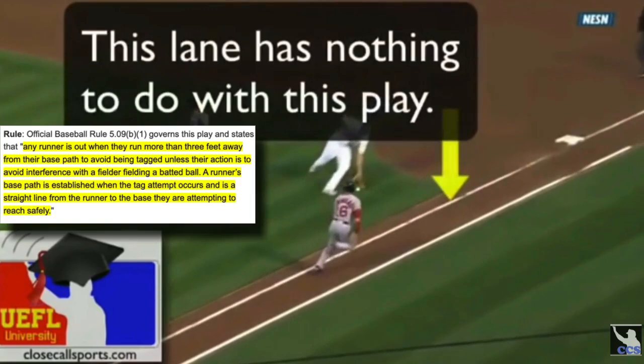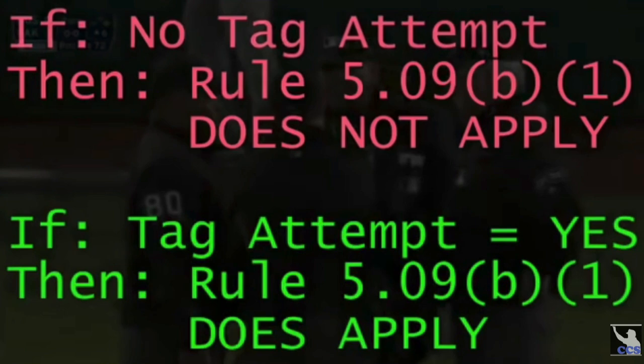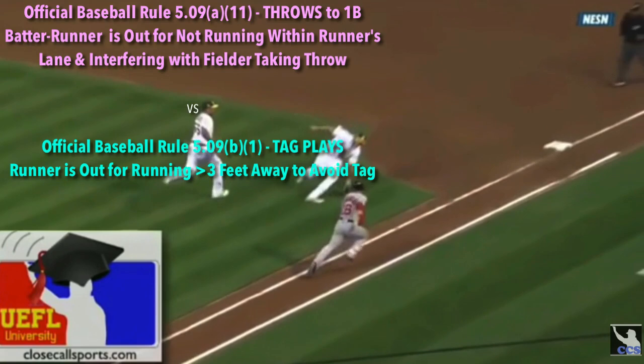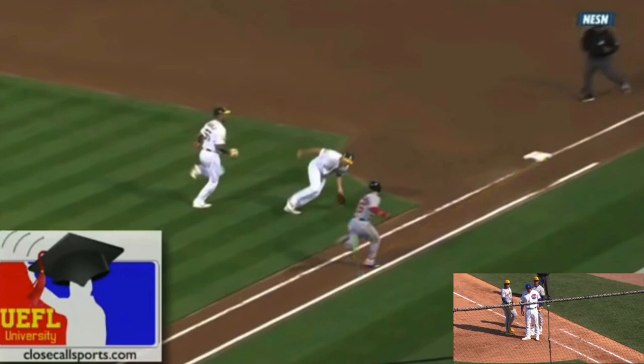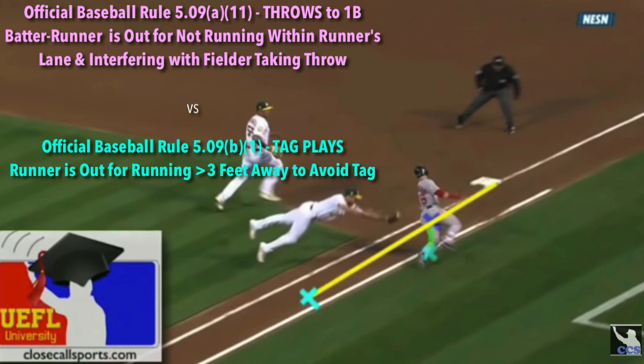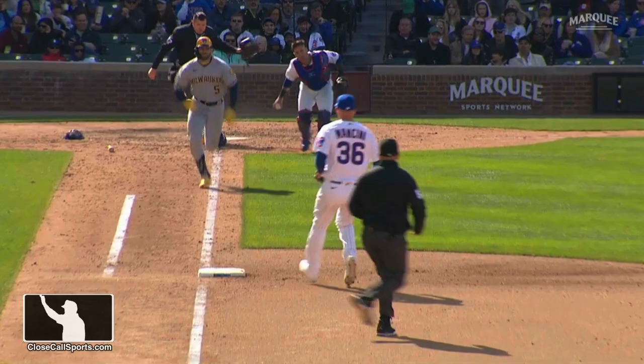The three-foot tag rule requires a tag, whereas the runner's lane requires a throw — that's the main difference between the two. If there's a throw to first base, you're looking at the runner's lane. If there's a tag attempt, you're looking at the three-foot avoidance of a tag rule. The runner's lane and the tag-avoidance three-foot area — for plays like the Red Sox-Oakland one — it's just coincidental that the runner's lane is there; the chalk in that case is meaningless, 100%. The broadcaster is right about that had this been a tag play. But because the Chicago play is a thrown ball, the runner's lane does apply. The three-foot to avoid a tag rule doesn't apply because there's no tag.